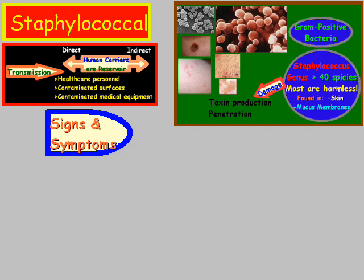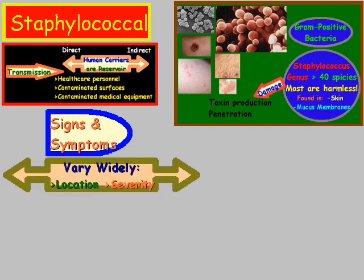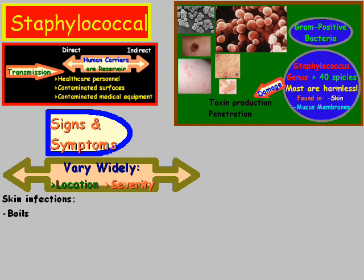When we look at signs and symptoms, there's a very wide range — and that's because there are 40 different species of the Staphylococcus genus, so signs and symptoms vary widely based on location and severity. Take for example skin infections: we can start with boils, then there's impetigo, which is a painful rash most common in young children and infants. Then there's cellulitis, which is an infection in the deeper layers of skin such as sores or ulcers.